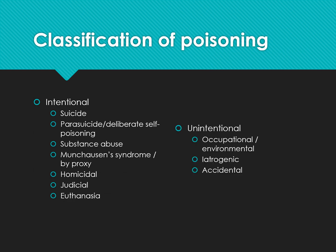There are different classifications of poisons. We can have intentional or unintentional. Intentional includes suicide, parasuicide, deliberate self-poisoning, substance abuse, Munchausen syndrome by proxy, homicidal, judicial, and euthanasia. Unintentional includes occupational, environmental, iatrogenic, and accidental.